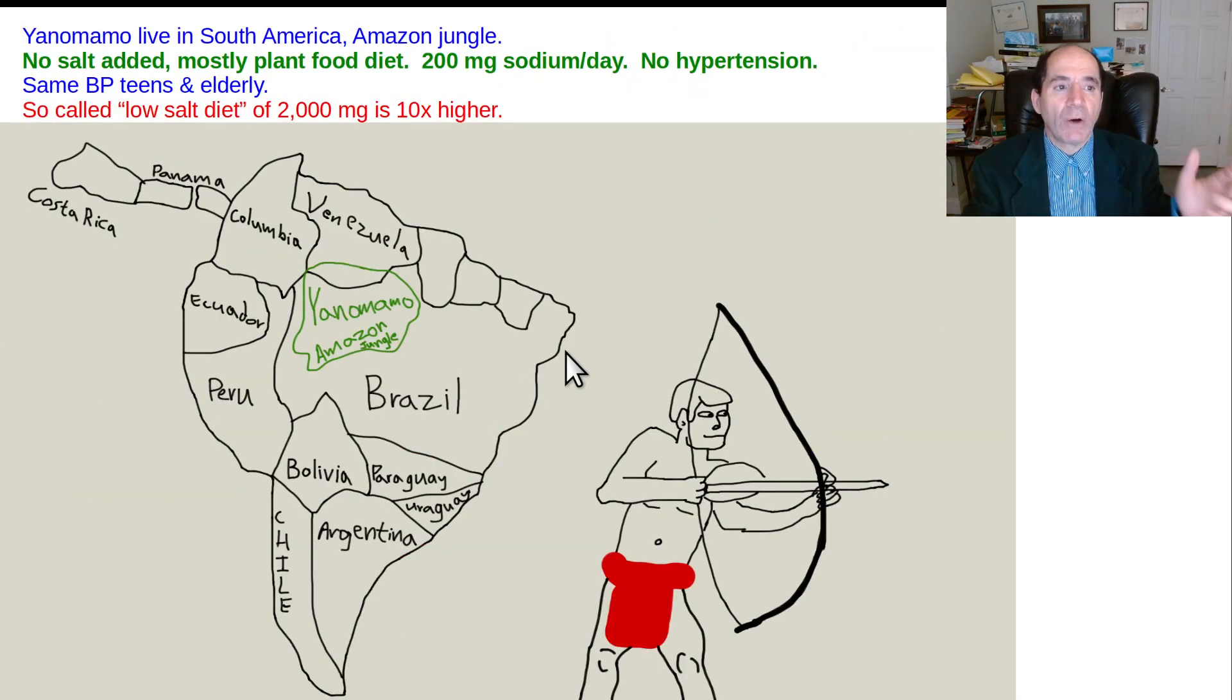If you look at the point I'm making here, it's always the same story. The old fashioned plant eating populations are skinny with normal blood pressures and no coronary artery disease. And the modern meat eating, oil eating, processed food eating are fat and sick. So Yanomamo in Brazil and Venezuela, a part of the Amazon jungle, they only eat 200 milligrams of sodium today, a primarily plant based diet. They don't have any hypertension. Same blood pressure in teens and in their 70s.